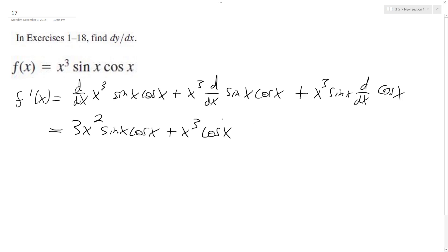The derivative of the sine x becomes cosine x. And just to shorten this, I'm going to rewrite this as cosine squared x plus the derivative of the cosine is negative sine x.